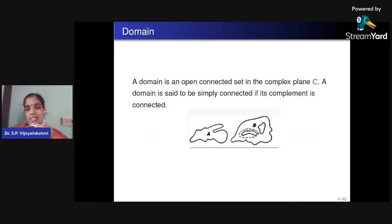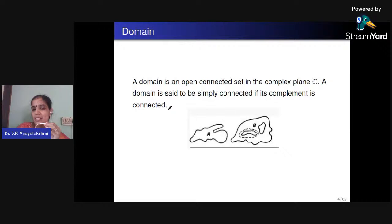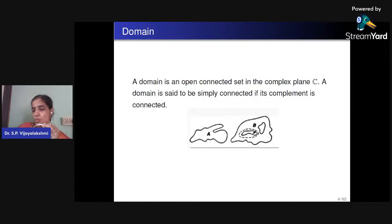First, what is a domain? A domain is an open connected set in the complex plane. Within domains we know simply connected and multiply connected domains. A domain is simply connected if its complement is connected — it can be contracted to a single point. If there are holes, like region B, the complement is not connected and it becomes a multiply connected region.